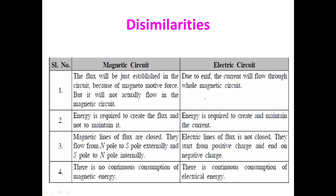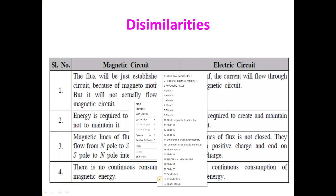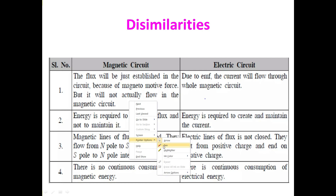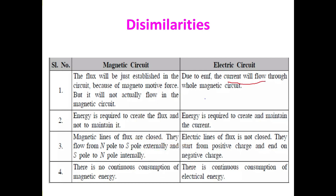Now for the dissimilarities: in an electric circuit, current actually flows through the circuit. However, in a magnetic circuit, flux does not actually flow — it is simply established. Also, energy is required to create the flux but not to maintain it, whereas in an electric circuit, energy is required both to create and to maintain the current.